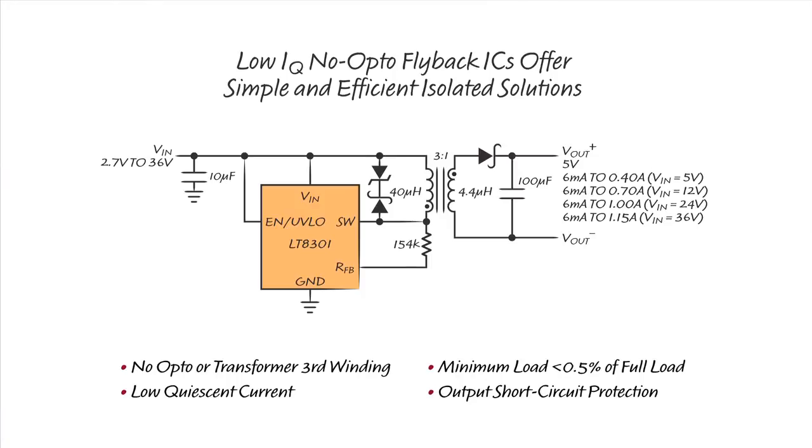The No Opto Flyback ICs feature low quiescent current, which improves light load efficiency and reduces no-load input standby current. The minimum load requirement is typically less than 0.5% of the full output. These ICs also feature output short-circuit protection.